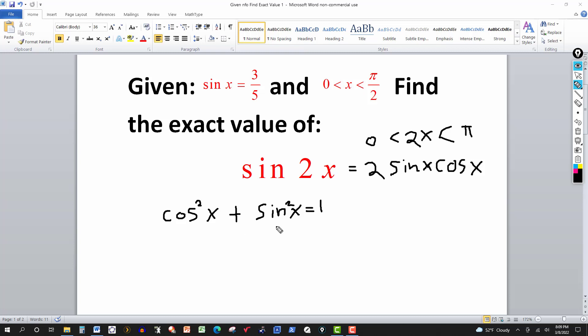So since we're given sine of x equal to three-fifths, then I can replace this by three-fifths. This will be squared. So three-fifths squared is 9 over 25. So we want to solve for cosine of x here, but first we need to find cosine squared of x.